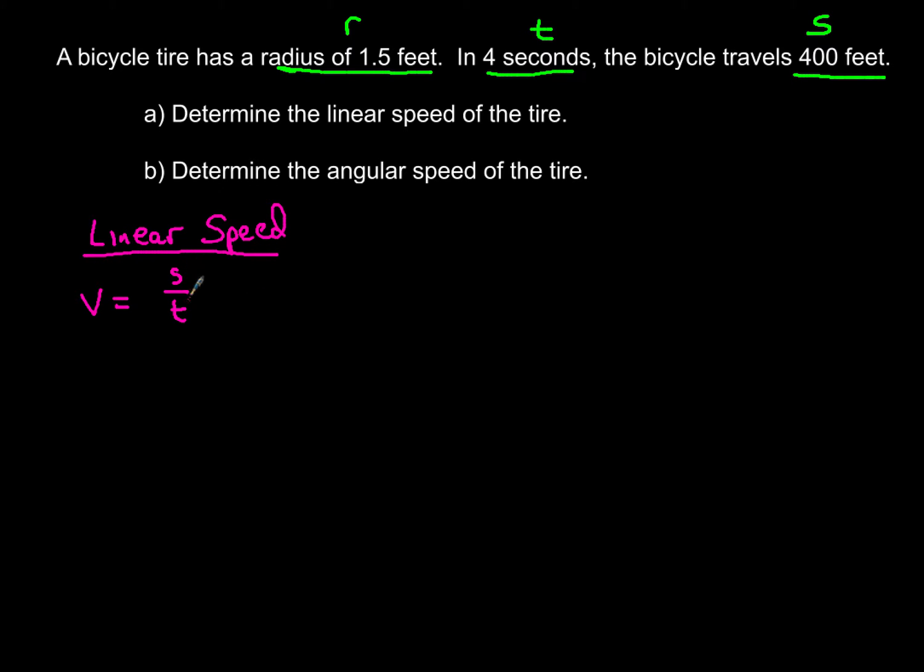But there's also another formula for linear speed, and sometimes you might have to use this one. If you don't have the arc length, you might have to use this formula, r theta over t. So that could be another variation that you would be able to use, depending on the information you're given. But we're not going to use this formula because we have s and t.